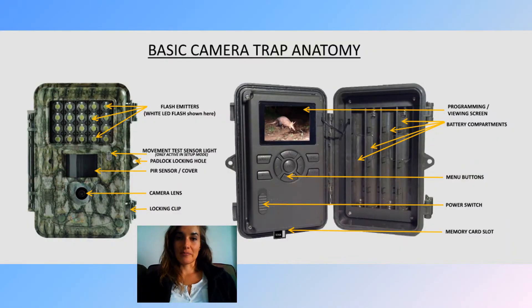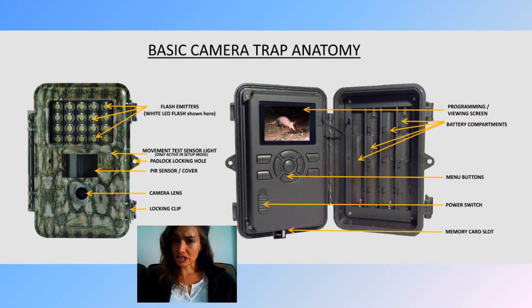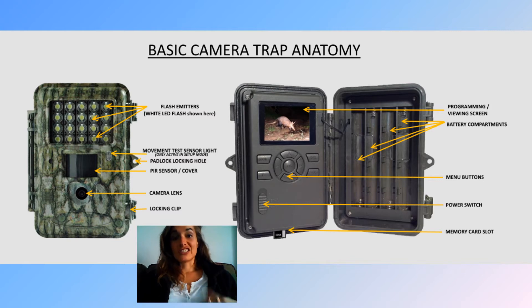Here's some basic camera trap anatomy. This picture shows what a basic camera trap looks like and what the various buttons and sensors are. Usually at the top you have the flash emitters for taking photos at night. It has a movement sensor, a camera lens, and inside there's space for batteries. Some camera traps support rechargeable batteries, and you've got basic settings where you can switch to video mode or photo mode, set the sensitivity of the sensor, the gap between photos, and other options.